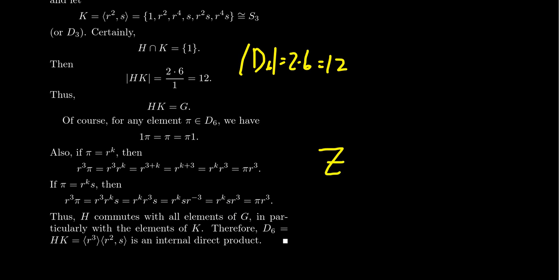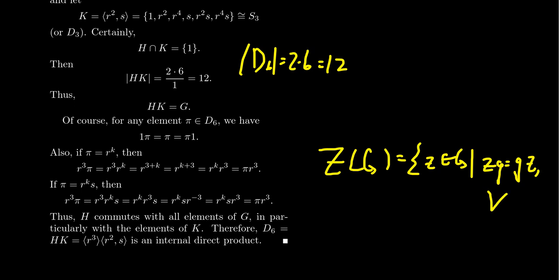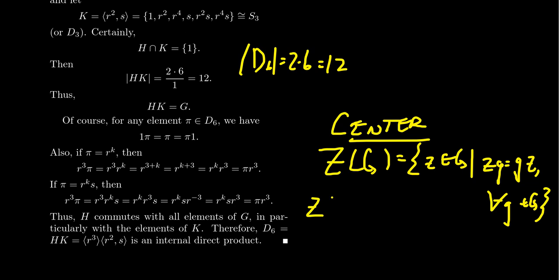Recall the center of a group is the set of all elements Z in G such that Zg = gZ for all g in G — the elements that commute with everything. It turns out the center of D6 is exactly the subgroup H we introduced. So in particular, H and K centralize each other since H is the center and therefore centralizes everything.